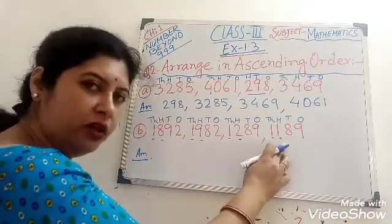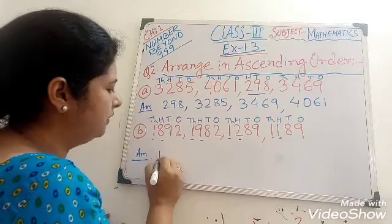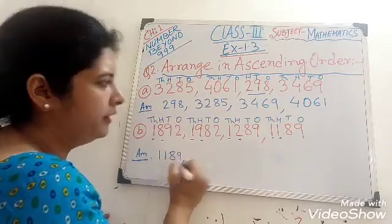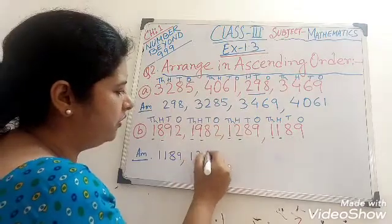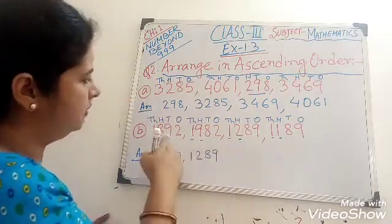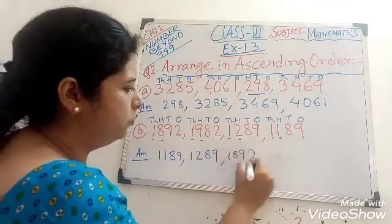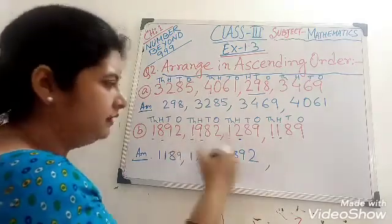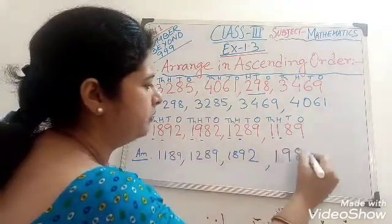So 1 is the smaller one, so we write down this number first: 1,189. Next, 1,289. Next, 1,892. And the last number, 1,982.